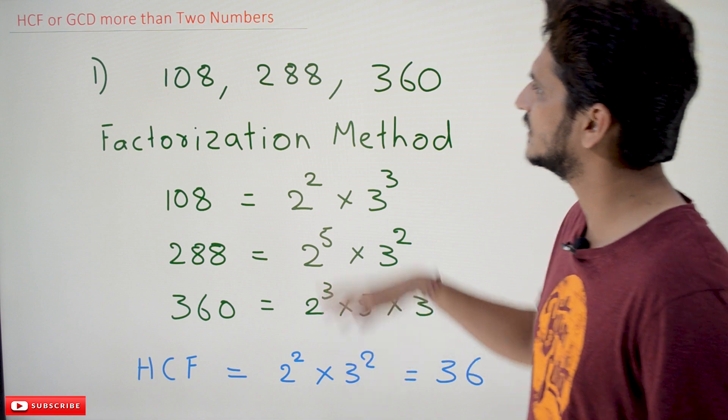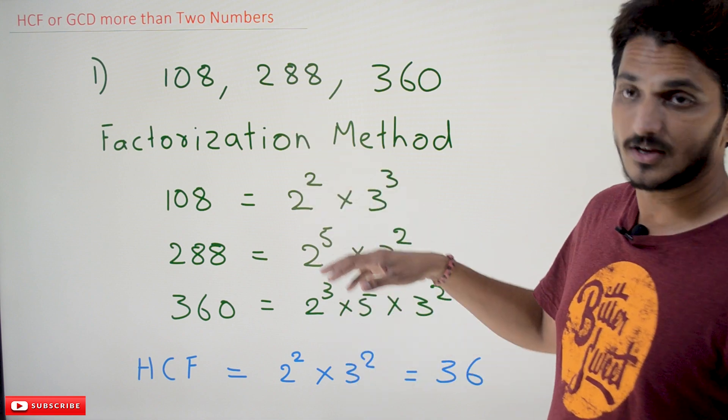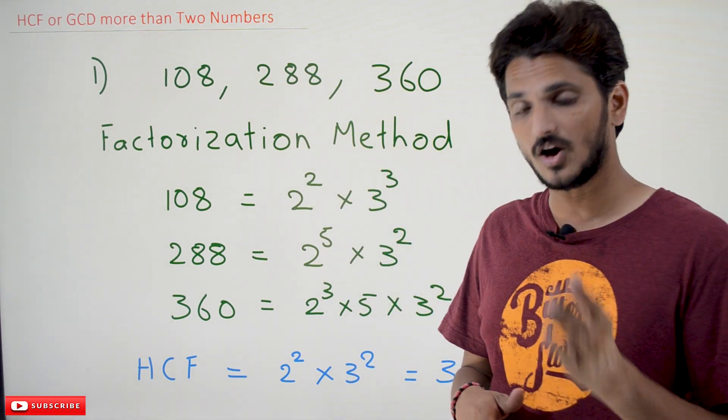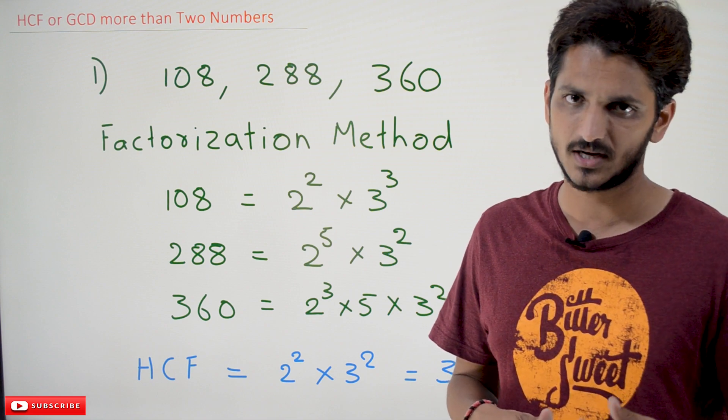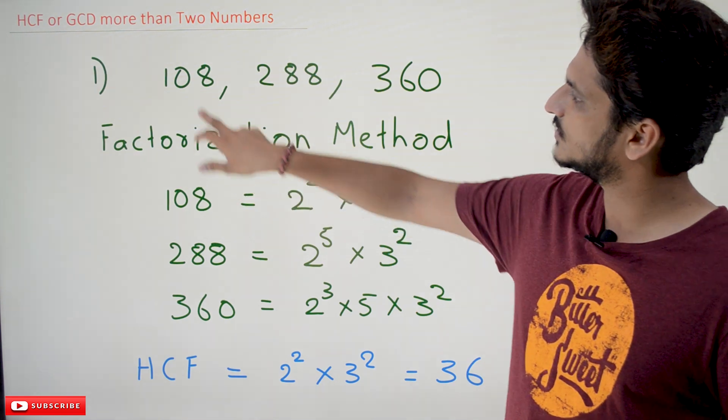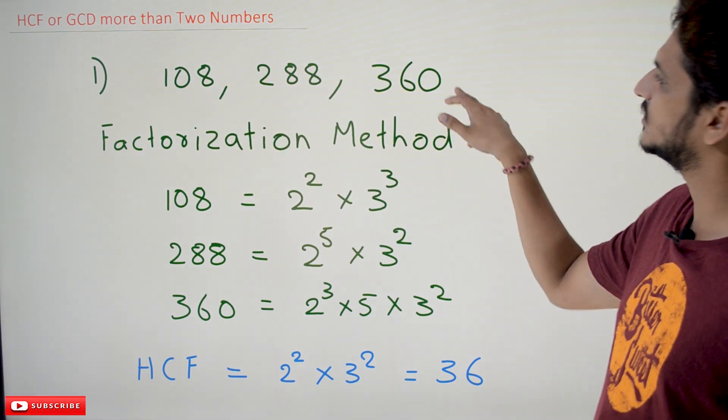Coming to today's class, if three numbers are there and you want to identify the GCD or HCF, there are two ways: factorization method or division method. First, we will understand factorization method. 108, 288, 360 are the numbers we have to identify the GCD for.